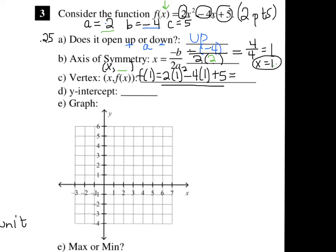I'm going to quickly do this in my head. 1 squared is 1, 2 times 1 is 2, 4 times 1 is 4, so 2 minus 4 is negative 2, and negative 2 plus 5 is 3. So our y value is 3. So x is 1, y is 3 — those are the coordinates of the vertex.